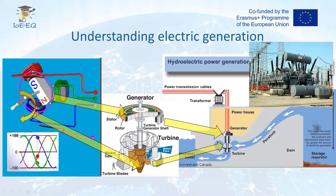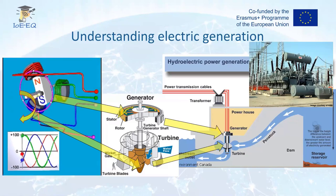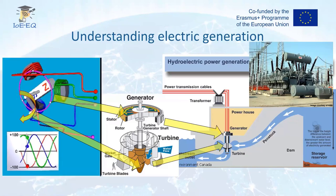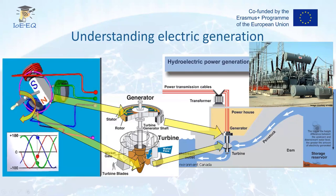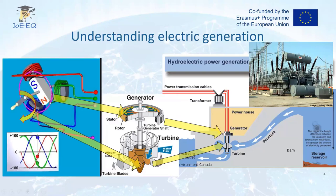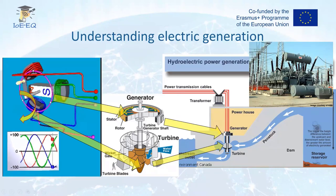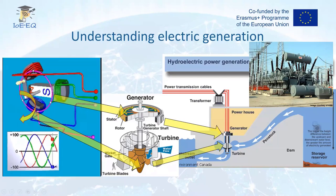Here we have a hydro power plant as an example of how potential energy stored in a dam is transformed into mechanical energy. When the water goes through the penstock hitting the blades of the turbine, the turbine is connected to the generator, which transforms this mechanical energy into electrical energy. The voltage of the generator is stepped up in a transformer to connect with the high voltage transmission line, as we saw in the previous slide.